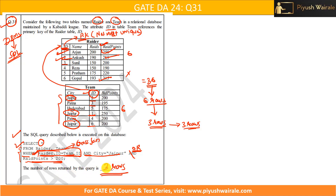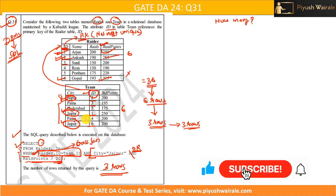Now, what if instead of AND we use OR? With OR and without brackets, AND has higher precedence, so we still get three rows. But if we add brackets — WHERE rider.id = team.id AND (city = 'Jaipur' OR rate_points > 200) — then rows where rate_points > 200 for any city are also included. Apart from IDs 1, 2, and 6, one additional row satisfies rate_points > 200, so the output becomes four rows.